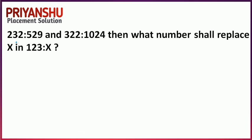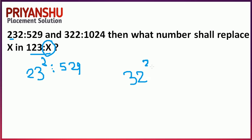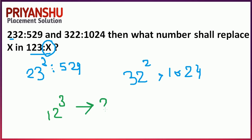Next question: 3232 is written as 529, and 3222 is written as 1024. What replaces X in 123X? The pattern is: 23 squared = 529, and 32 squared = 1024. So for 123, the answer involves 12 to the power of 3, which you can calculate.